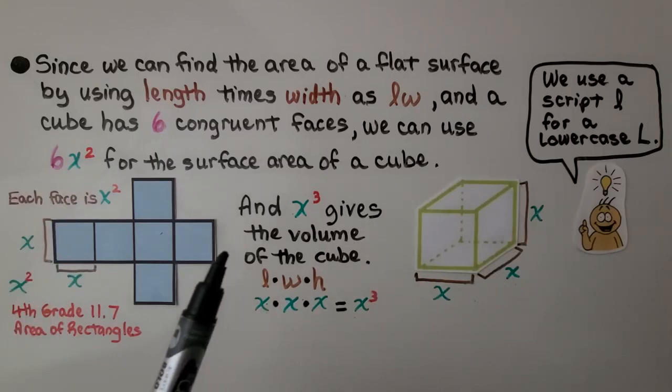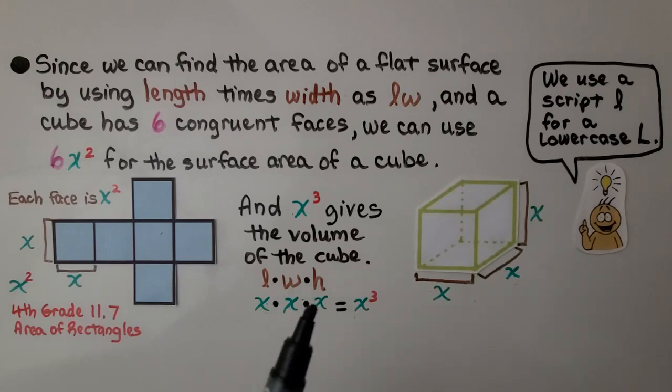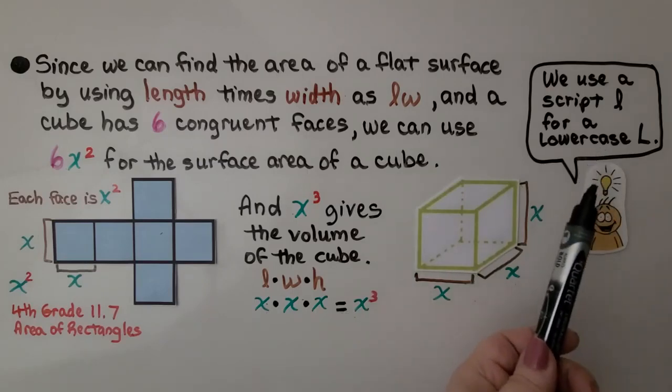And x cubed, x raised to the third power, gives the volume of the cube: length, width, and height, x, x, and x. They're all congruent, all the sides. So we have x times x times x, it's equal to x raised to the third power. And we use a script L for a lower case L so we don't get it confused with a one.